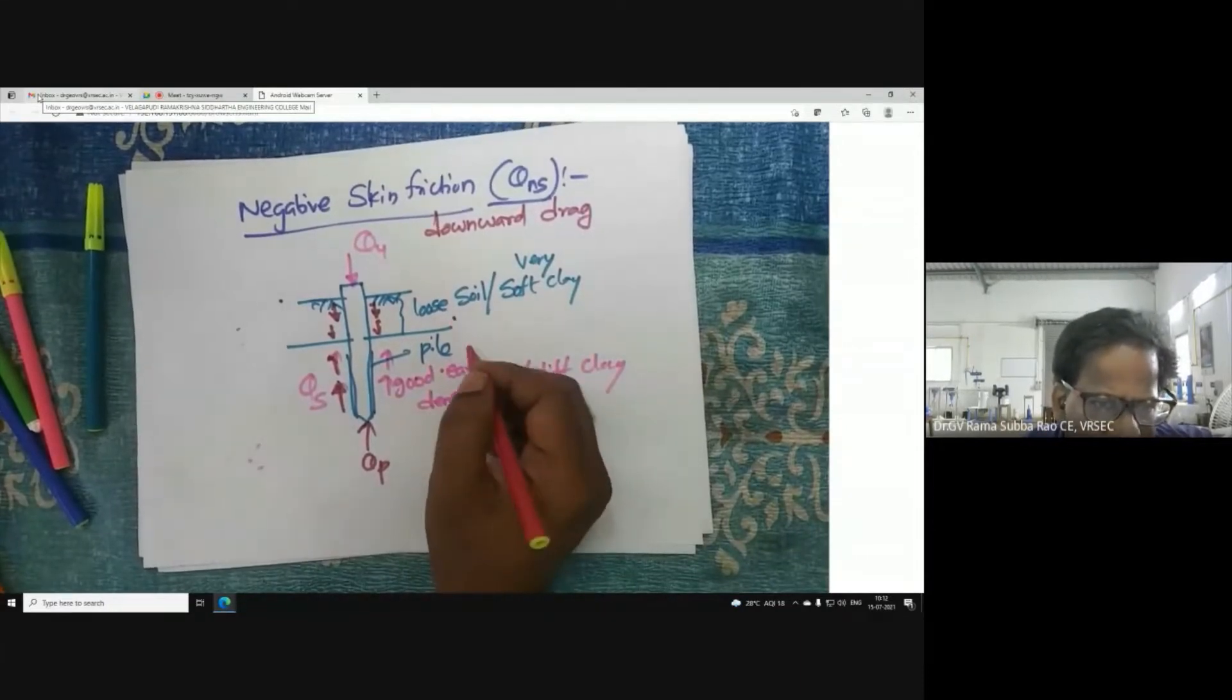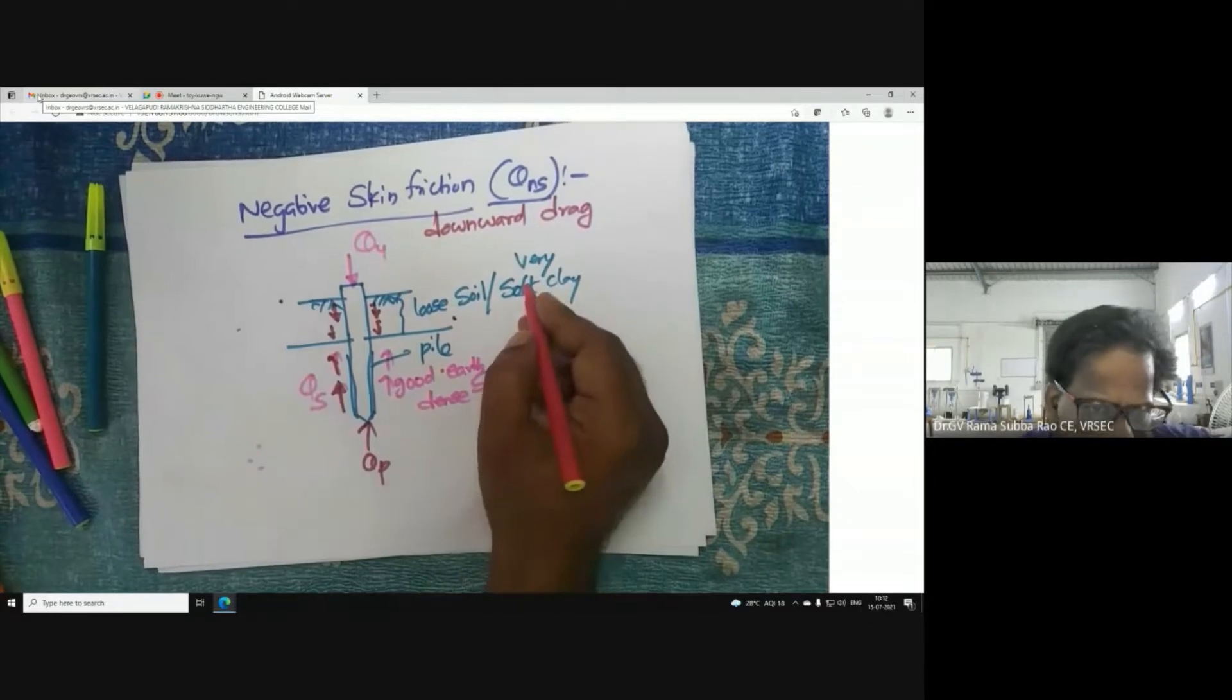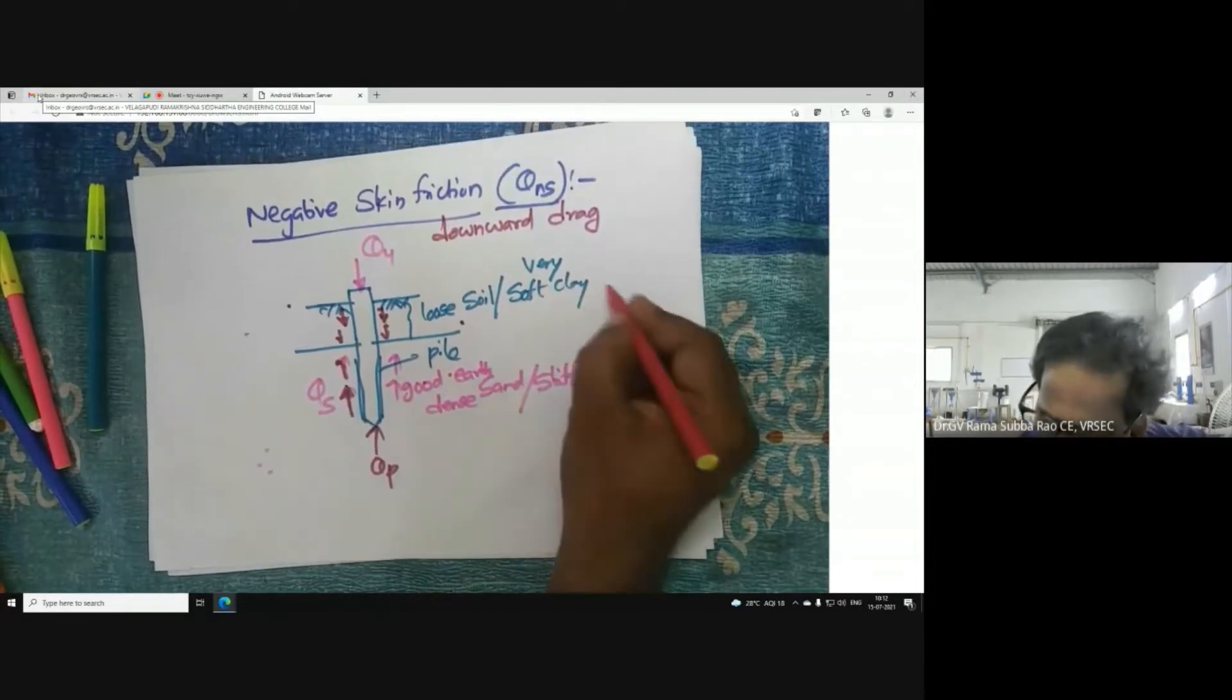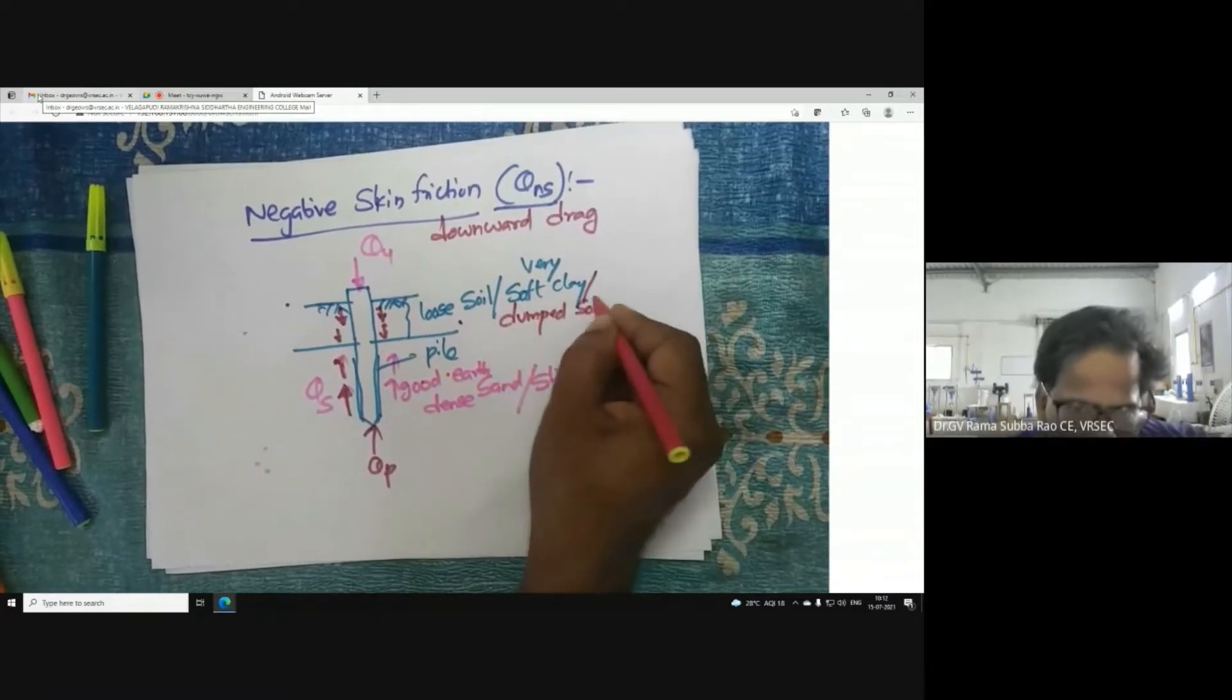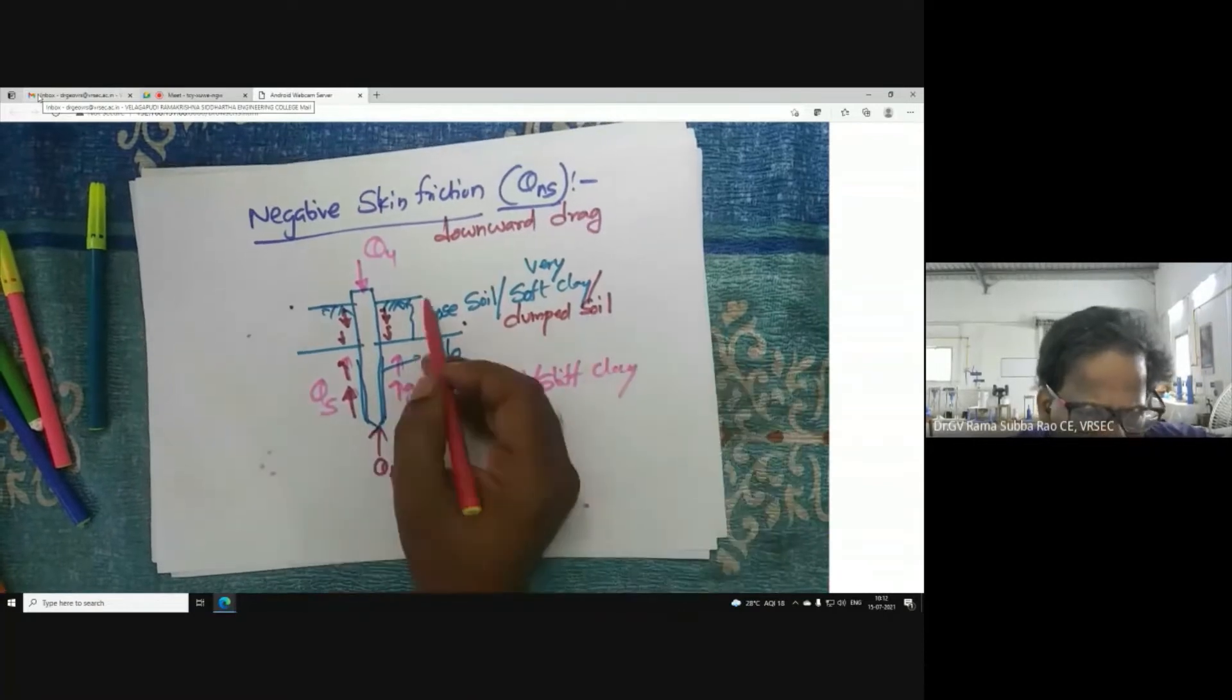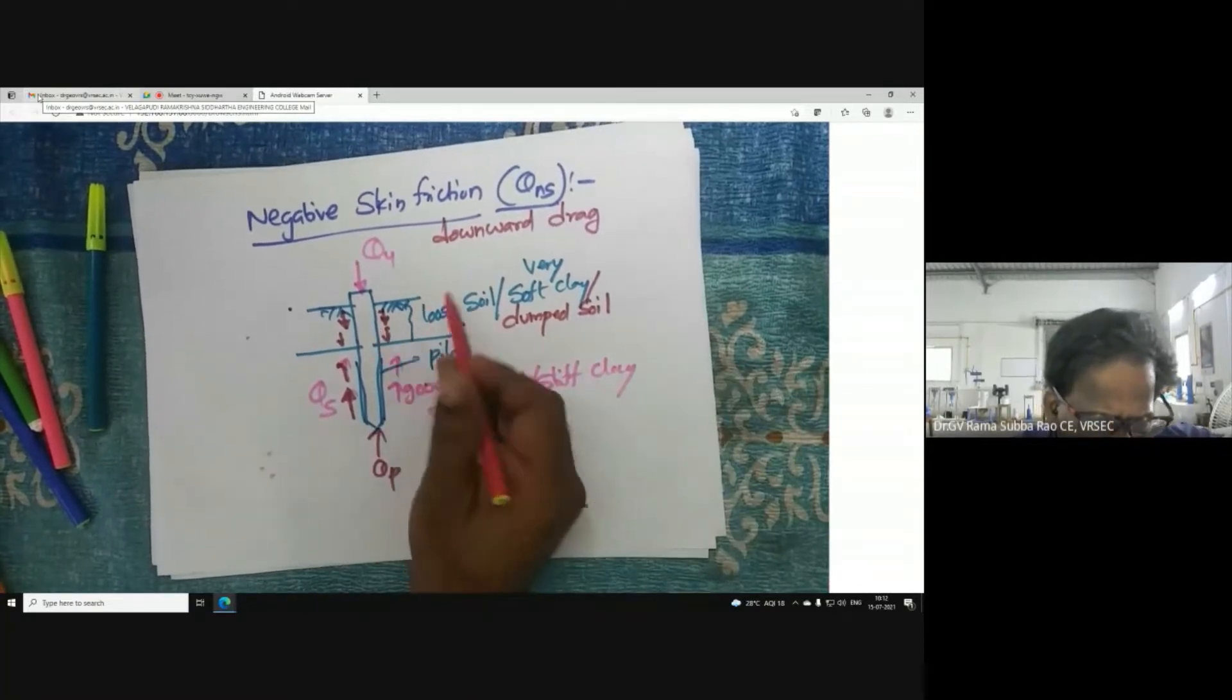What is loose soil? It means recently deposited soil, sometimes dumped soil - I can say young soil, meaning it was very recently deposited.